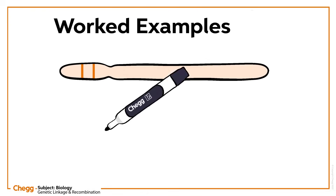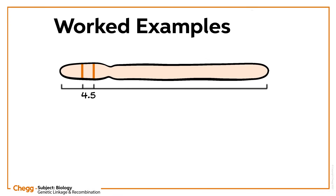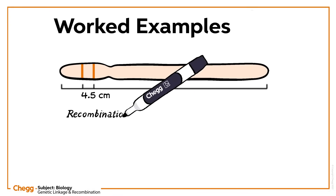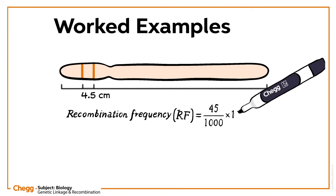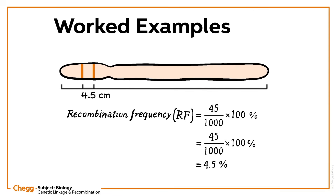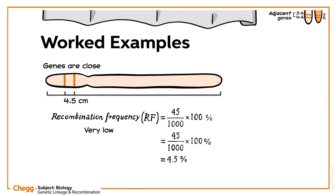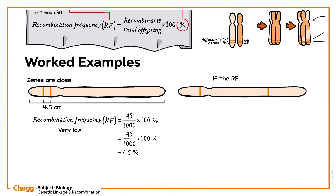If the total of different recombinants is 45 among 1,000 offspring, then the recombination frequency is very low, so it can be said that the genes are close — 4.5 centimorgans, or 4.5 map units apart. Similarly, if the RF is 37.5%, then the genes are 37.5 centimorgans, or 37.5 map units apart.